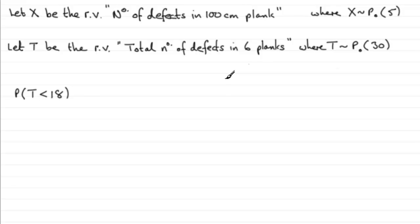Now it says use a suitable approximation to work out the probability that T is less than 18, and that approximation is a normal approximation. The reason for that is because the mean here, 30, exceeds a particular value.